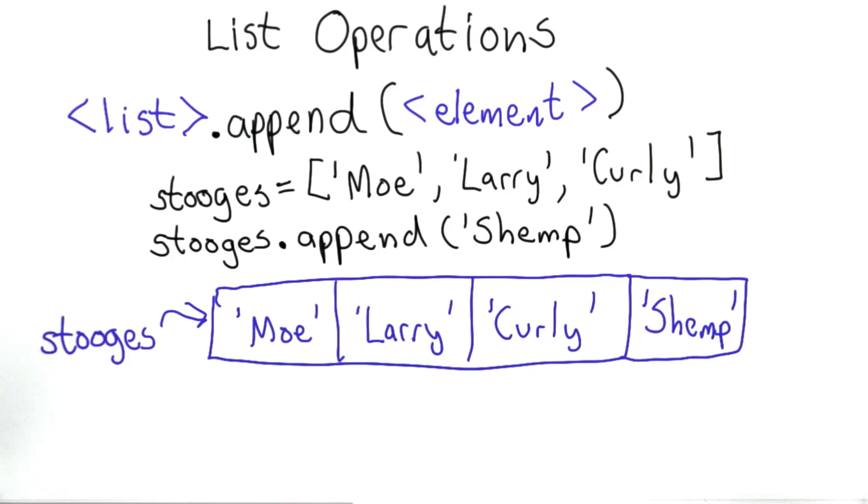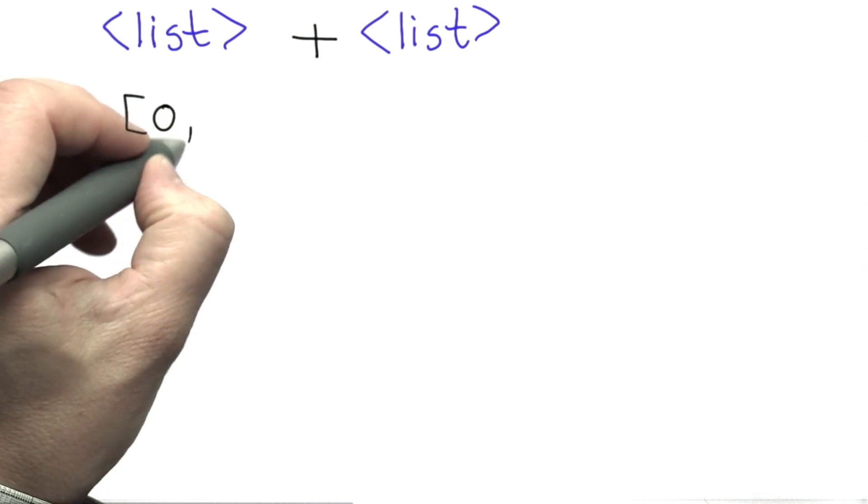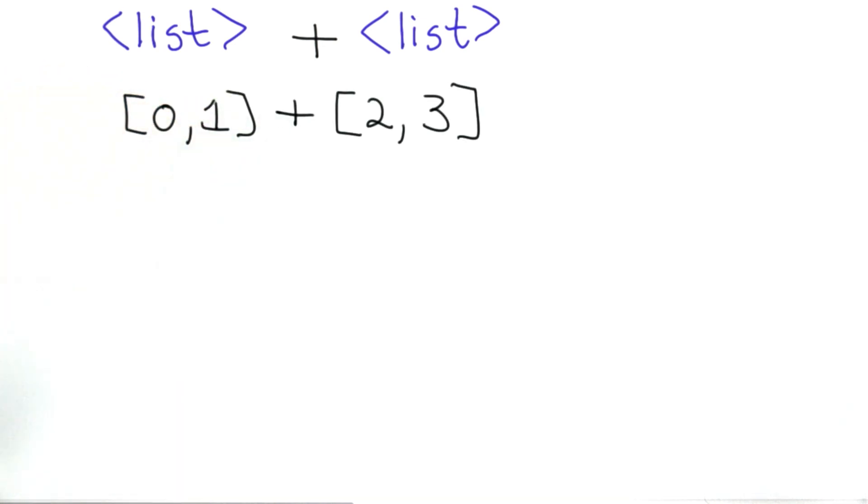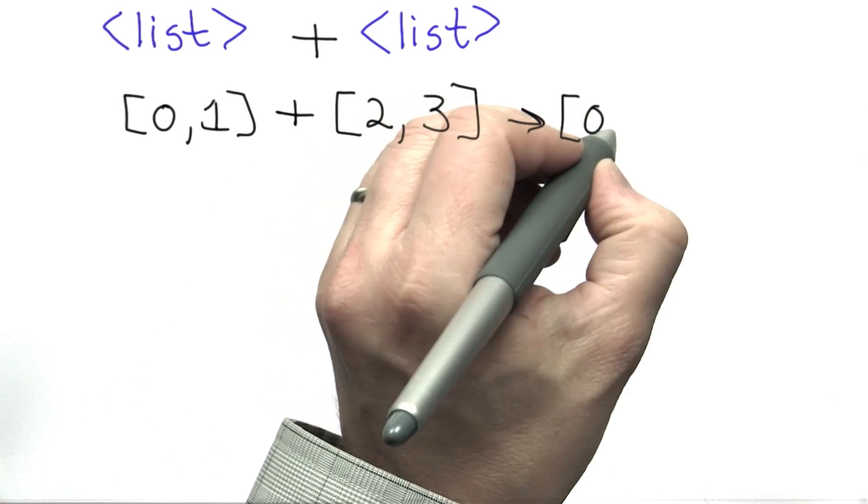So that's what append does. We're going to introduce two other list operations. The next one is plus. Plus behaves very similar to the concatenation operation for strings. If we have the list [0,1] plus the list [2,3], the result is the list [0,1,2,3].